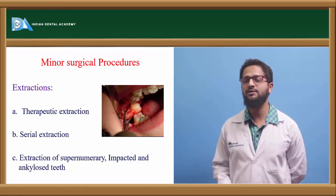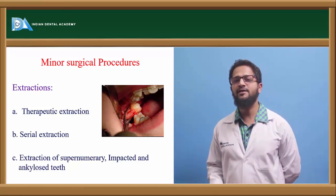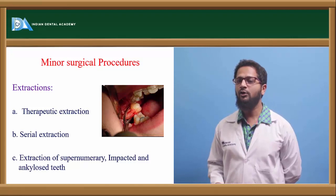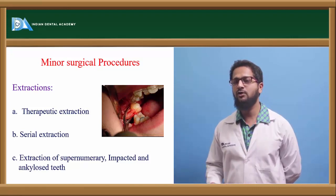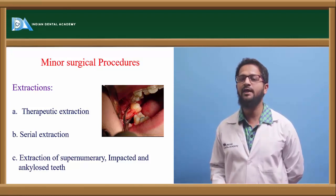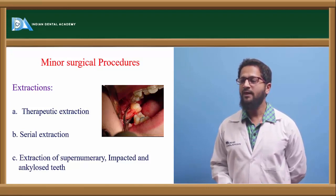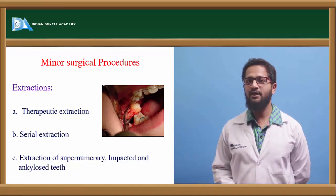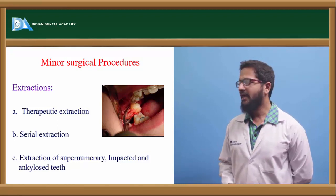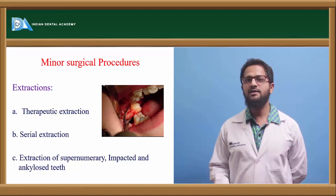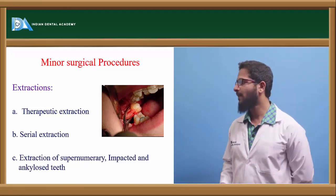Serial extractions involve the extraction of certain deciduous teeth followed by extraction of certain permanent teeth, so as to allow all remaining teeth to properly align in their correct positions. It is done during the mixed dentition period where there is severe arch length deficiency. Serial extraction is a complete topic which will be dealt with in another class.